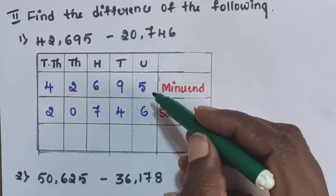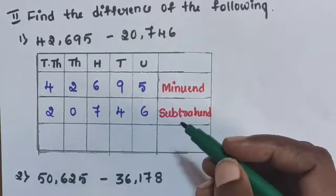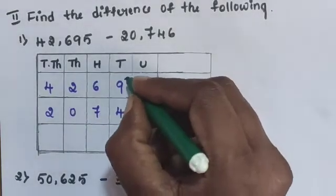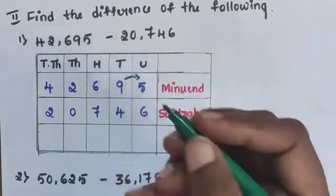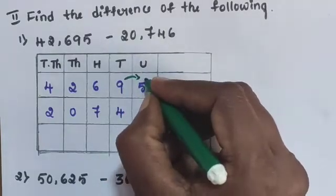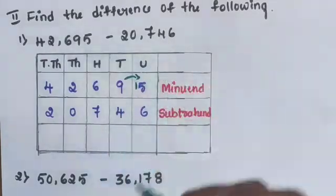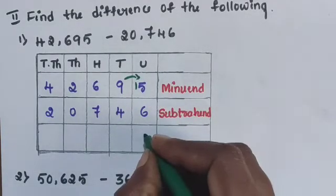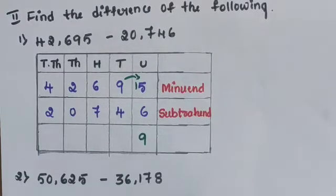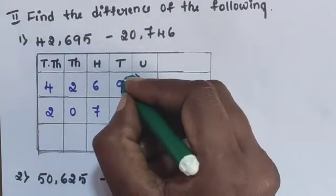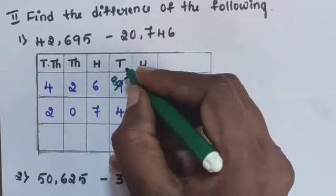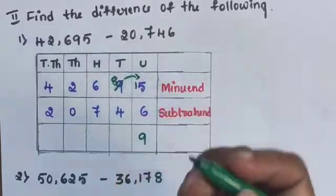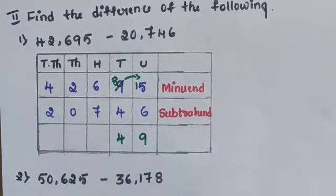5 minus 6 — 5 is smaller than 6. Take a carry from the tens place; make it 15. 15 minus 6 is 9. The remaining value in the tens place is now 1, making it 18. Wait — the tens place value is 18, so 8 minus 4 is 4.